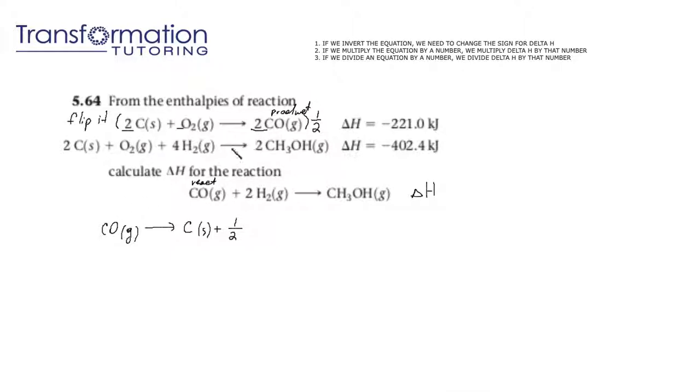So CO divided by 2 is 1. C divided by 2 we got 1 also and O2 will get 1 half next to it and we have inverted it.